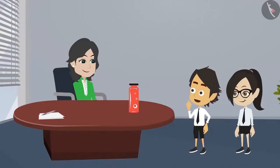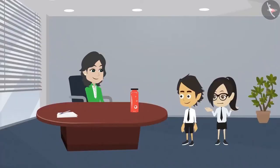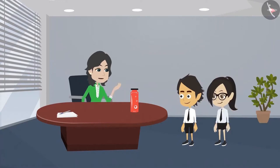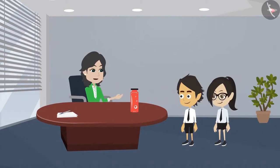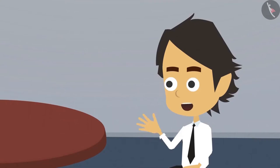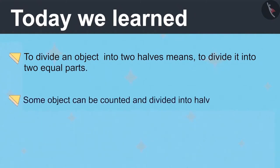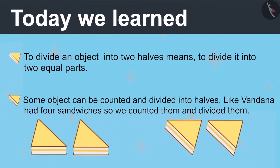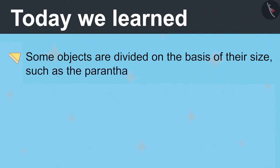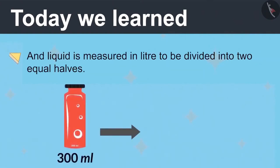Now we have learned to divide all types of objects into halves. No, you still haven't learned to divide all types of objects into halves. What objects cannot be divided into two equal halves? Tomorrow I will get those objects that you haven't learned to divide into two halves — only then I will tell you about them. Now please go to your class. Today we learned that to divide an object into two halves means to divide it into two equal parts. Some objects can be counted and divided into halves, like Vandana had four sandwiches. Some objects are divided on the basis of their size, such as the paratha. And liquid is measured in liters or milliliters to be divided into two equal halves.